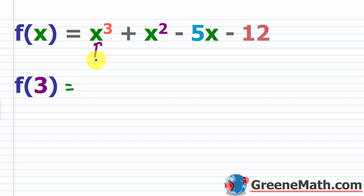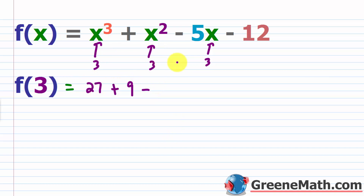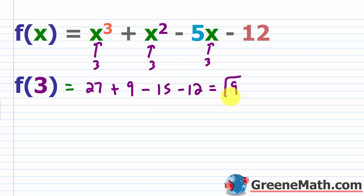So what is f of 3? I'm just going to plug in a 3 here, and here, and here. So I would have: 3 cubed is 27, plus 3 squared is 9, minus 5 times 3 is 15, and then minus 12. So this gives us: 27 plus 9 is 36, minus 15 is 21, and 21 minus 12 is 9. So this result — we already know how to do this by plugging in.